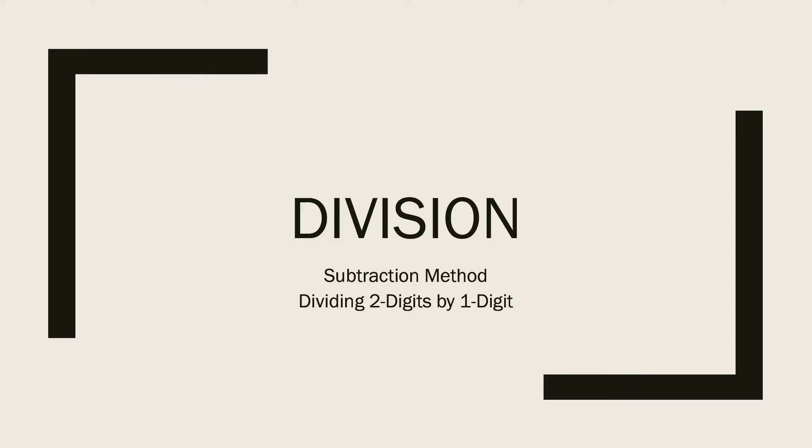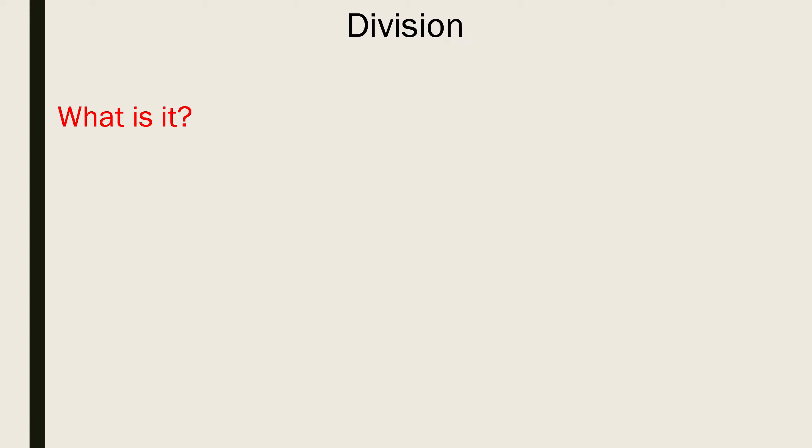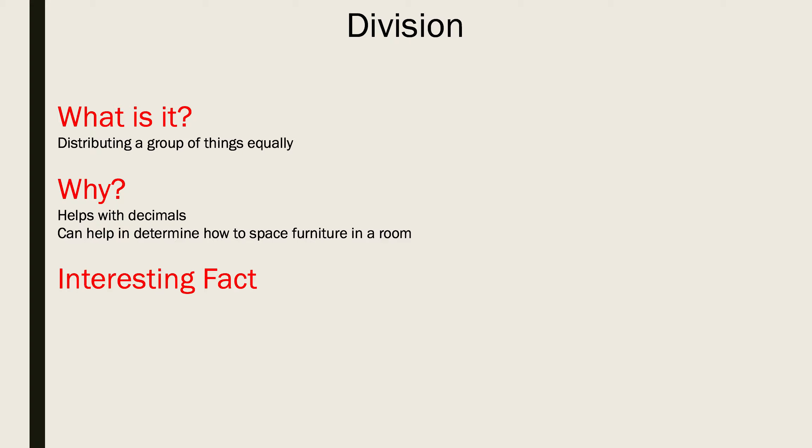Division subtraction method: dividing two digits by one digit. What is it? Distributing a group of things equally. Why? Helps with decimals. Can help determine how to space furniture in a room. Interesting fact: cold water heats up faster than hot water.